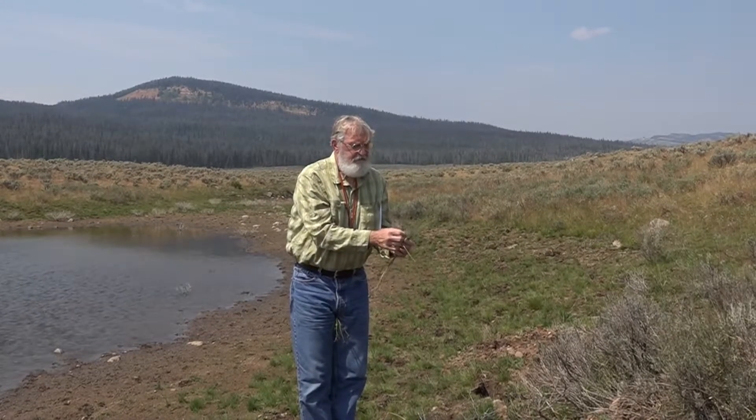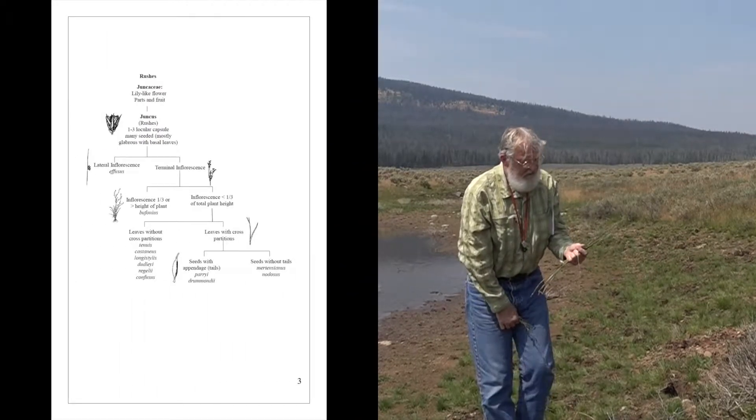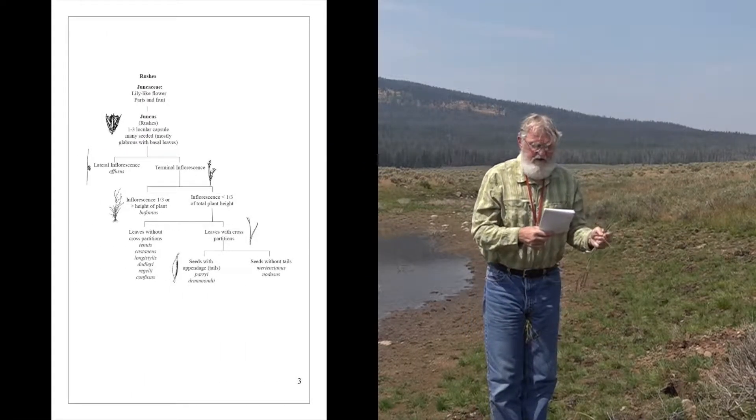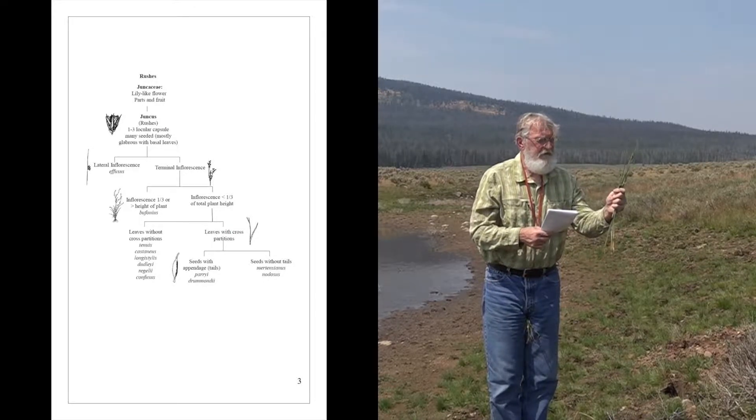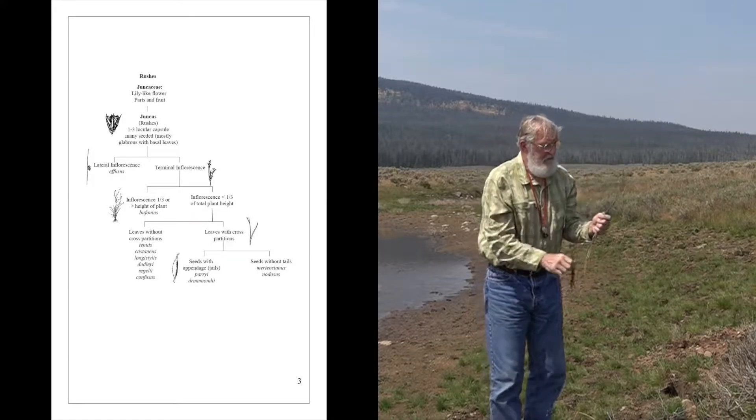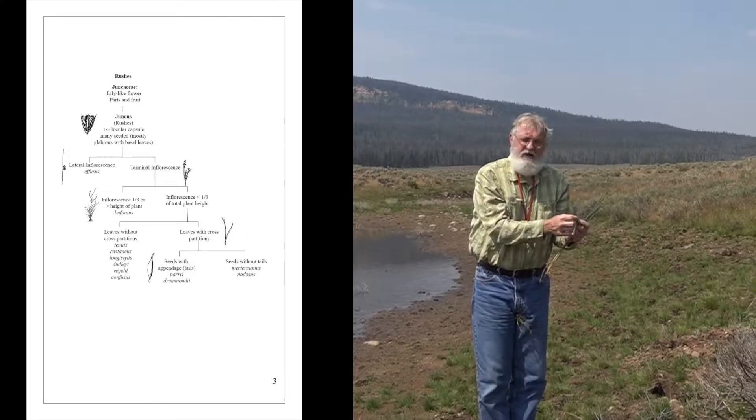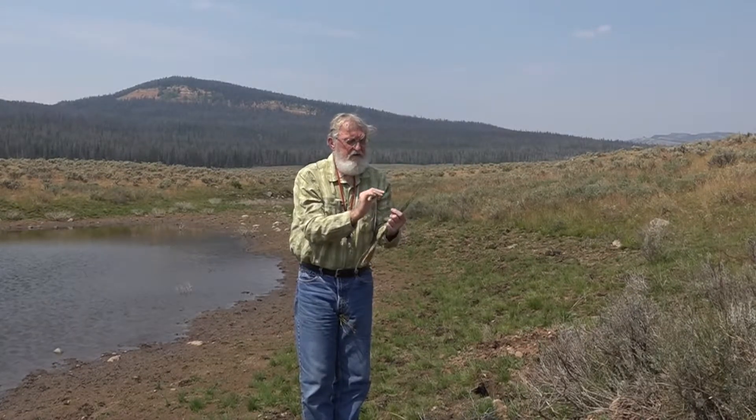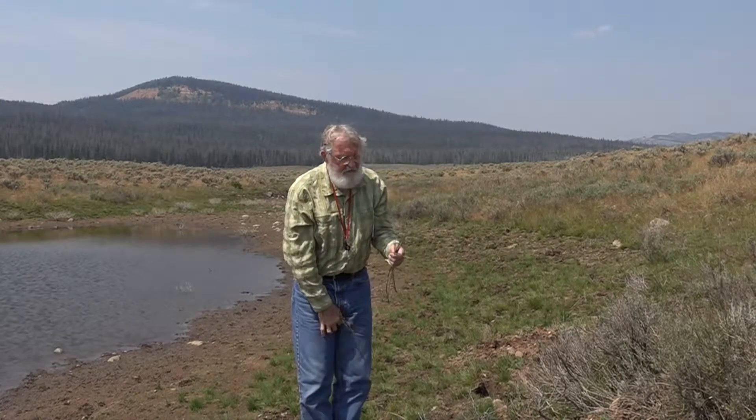There's another group of Juncuses where the inflorescence is on the side of the stem — not at the tip, but lateral. So the next question in the key is whether you have a lateral inflorescence or a terminal one. When you get to the lateral group, there are a few species, but you don't have to key any further. A very common one found nationally is Juncus effusus. You go into the lateral group, and you'll probably see effusus and maybe one or two others, and you're done.